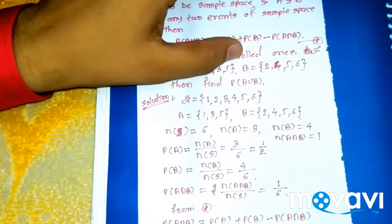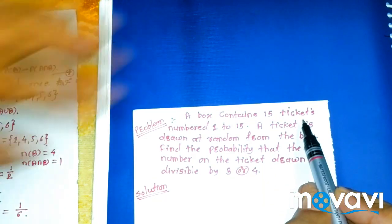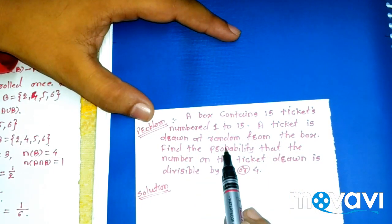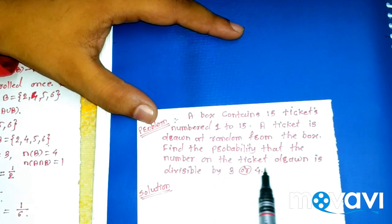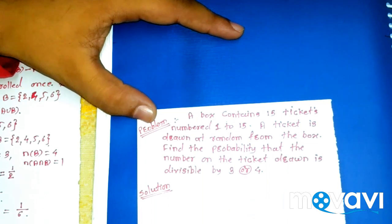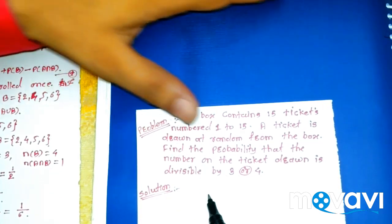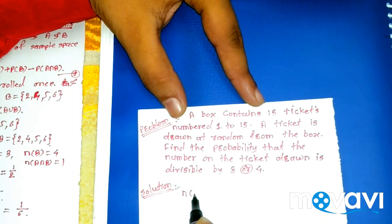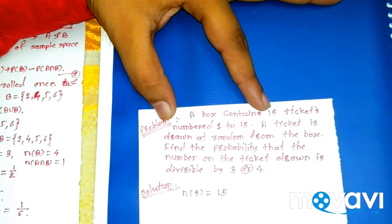We take one more problem. A box contains 15 tickets numbered 1 to 15. A ticket is drawn at random from the box. Find the probability that the number on the ticket drawn is divisible by 3 or 4. We solve this using the addition theorem. Here n(S) = 15.